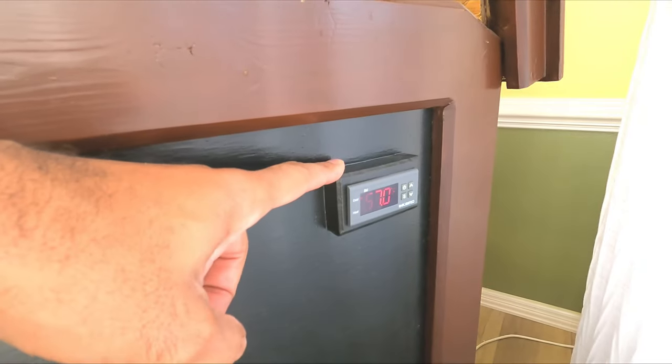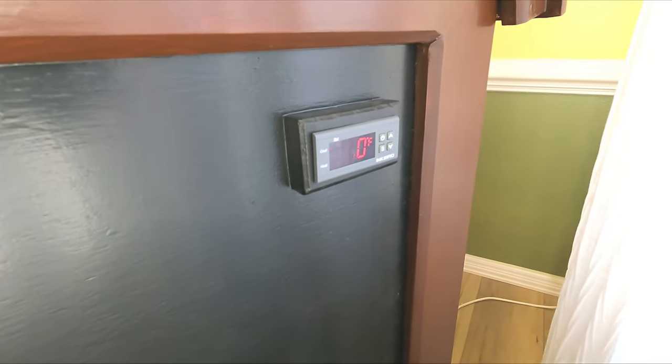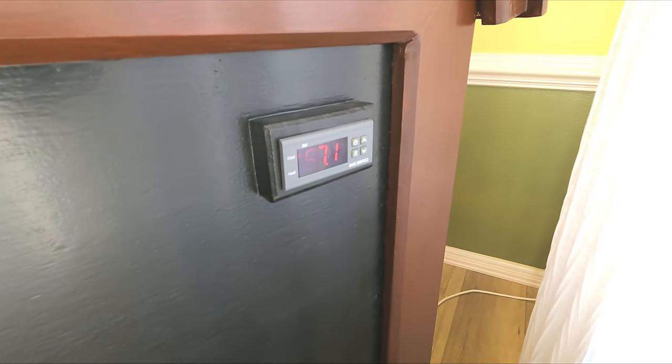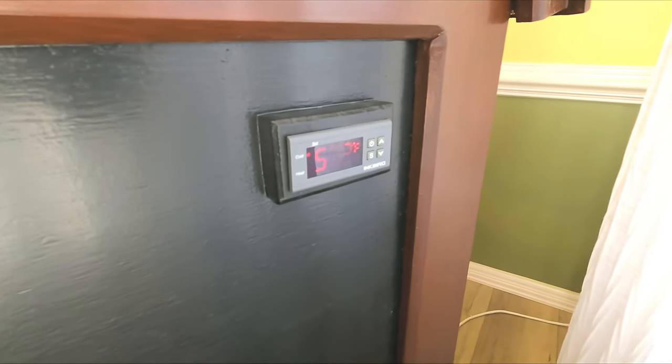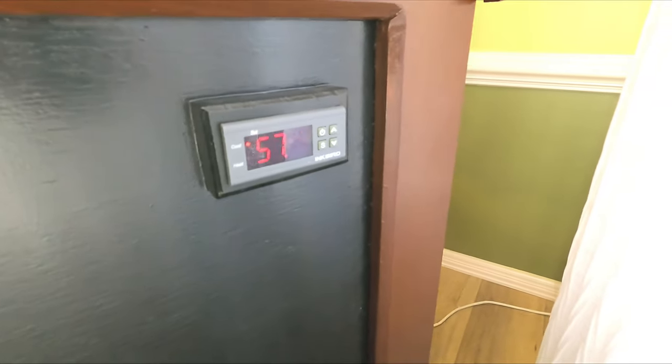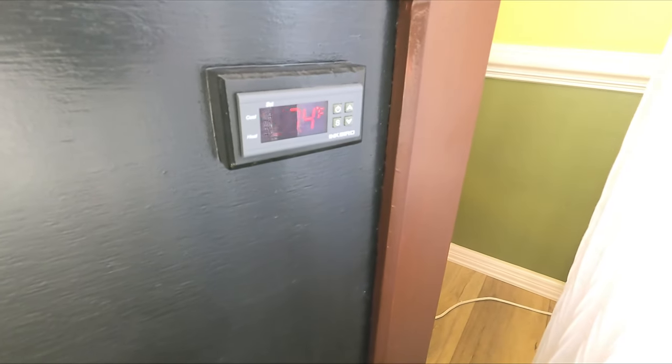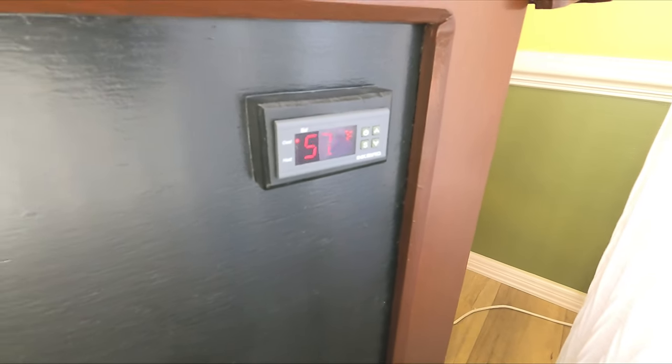First off, over here, controlling everything with this Inkbird temperature controller. This is how you make sure that the freezer actually cycles on and off and doesn't just freeze all of your beer. Right now, the temperature is obviously high. I keep this set to 44, but with the lid open, the temperature is going to come up.